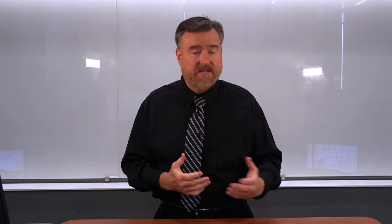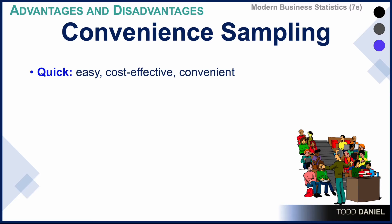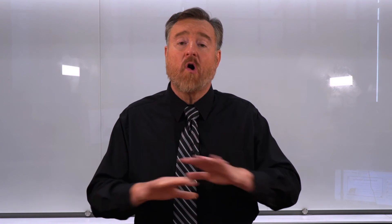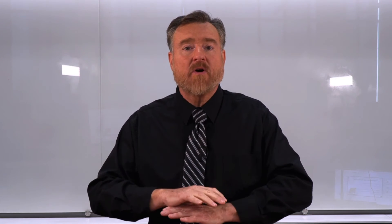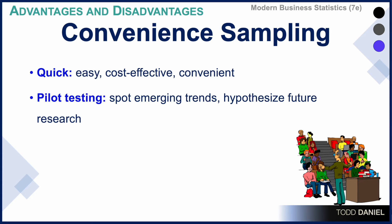There are advantages and disadvantages. The biggest advantage is it's quick, it's easy, it's cost effective — and that is why many researchers choose convenience sampling. This is not to say that convenience sampling is always bad. Because it is quick, sampling those who are readily available is a good way to spot emerging trends. It might be used as a pilot study. You can very quickly and easily gather data that gives you a snapshot of how things seem to be, and you can follow up to determine whether you want to do a larger, more full-scale random sampling technique for your research.